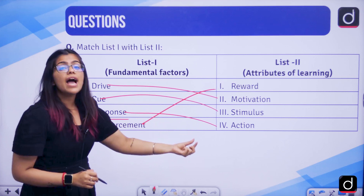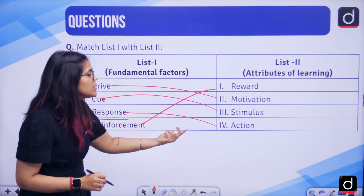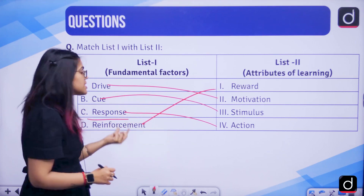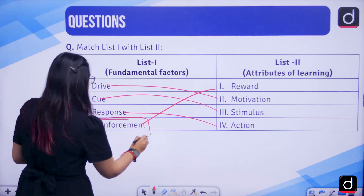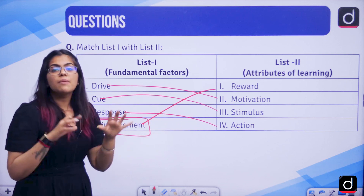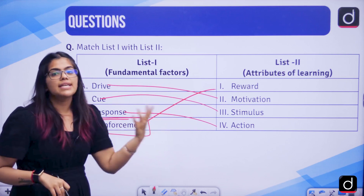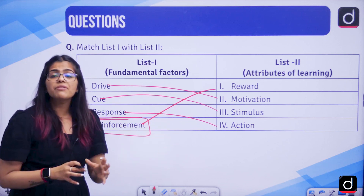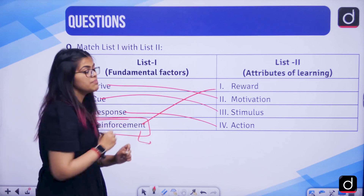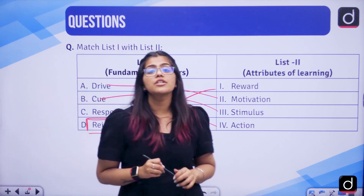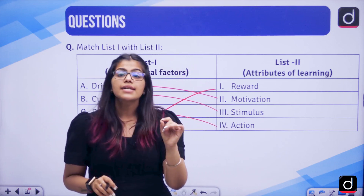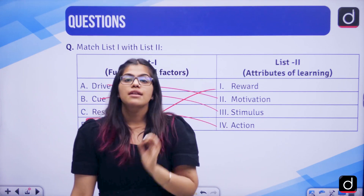A response is an action that you will be taking for the given cue or stimulus. Then comes reinforcement. The reinforcements are the reward — if you do something wrong, it can be punishment; if you do something right, there can be rewards. This concept of reinforcement comes from operant conditioning, also discussed in class, as talked about by B.F. Skinner.